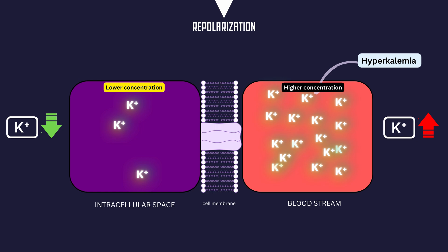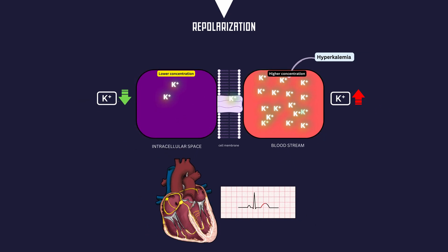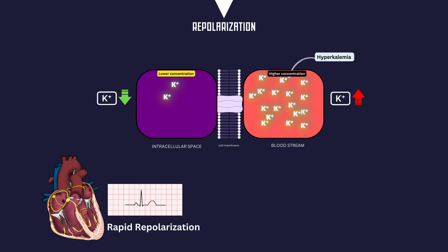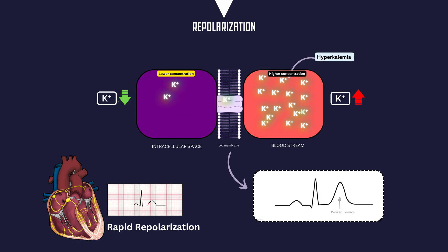So, when there's a higher concentration of potassium in the blood, it triggers a movement of potassium ions out of the cells, ensuring that the overall balance is maintained. But there is a problem — this results in repolarization with much higher intensity than normal: a rapid and exaggerated repolarization. Consequently, we observe peaked T-waves on the ECG during hyperkalemia.